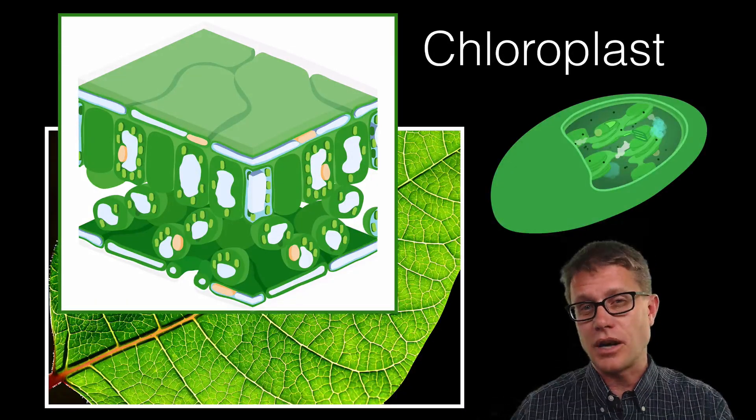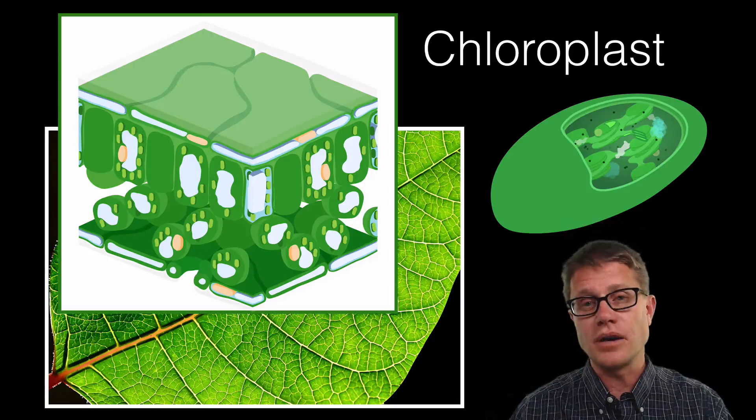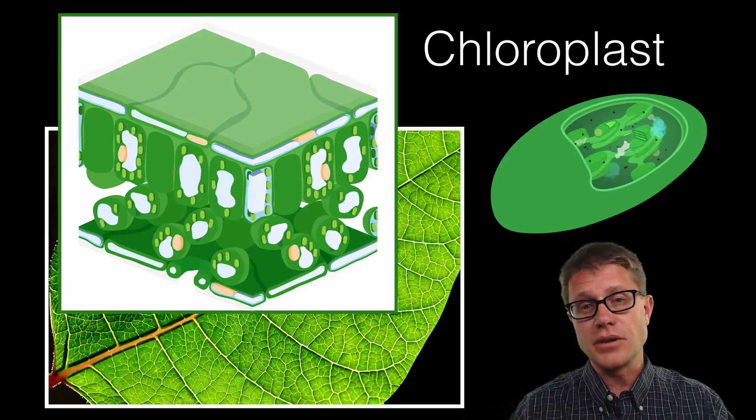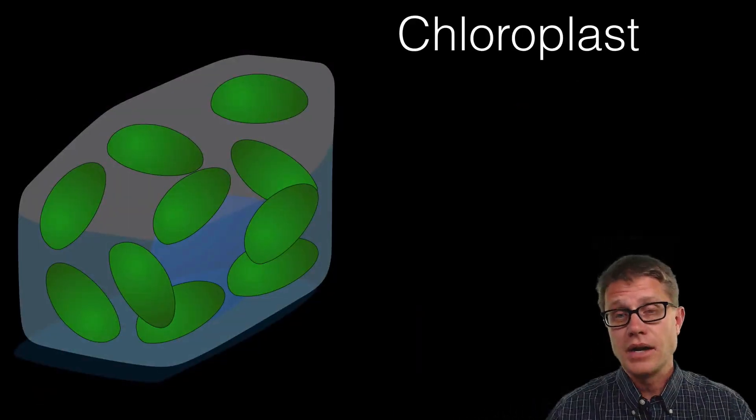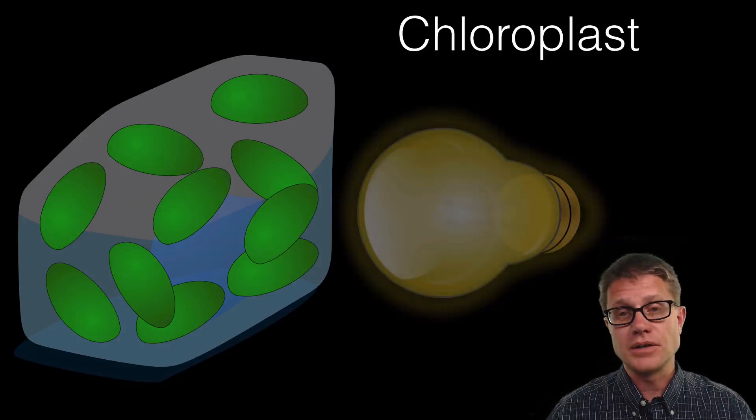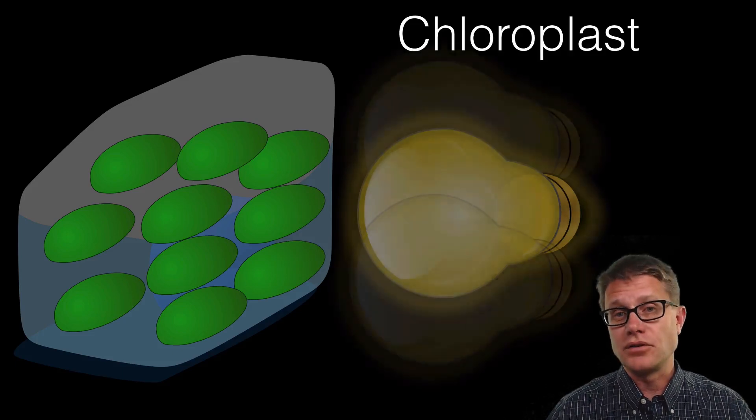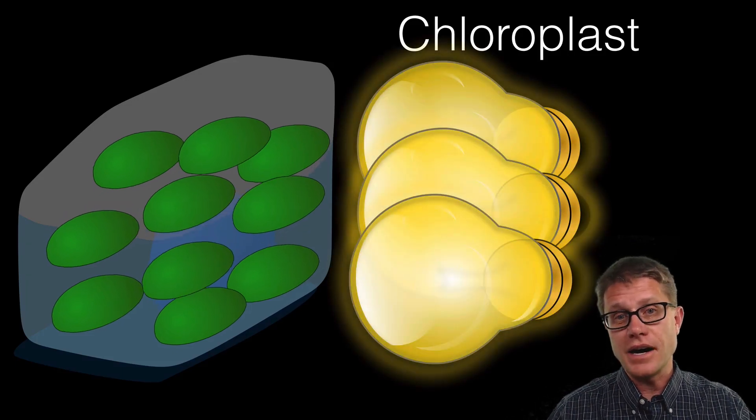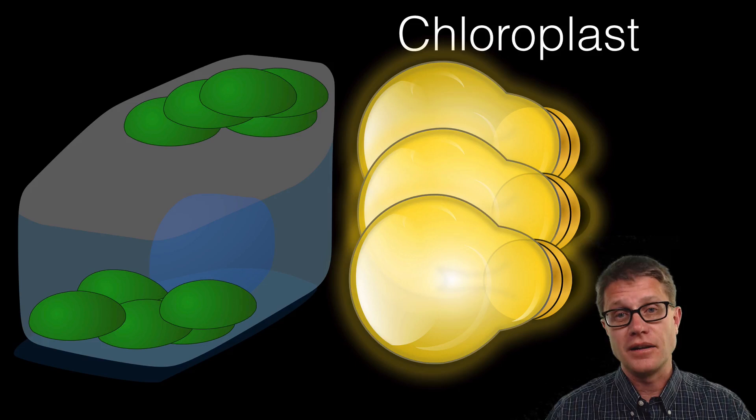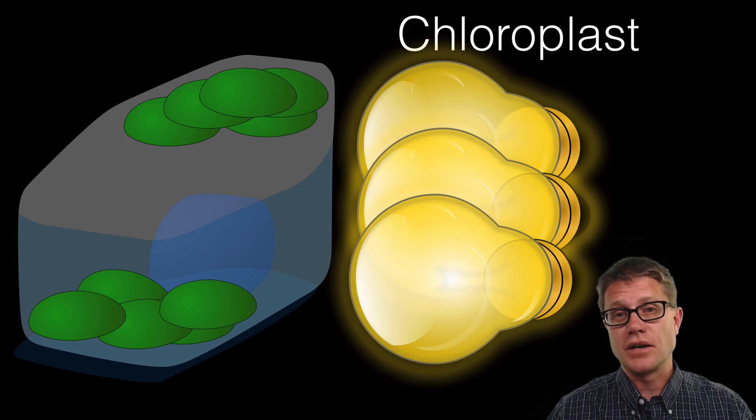They have a structure that we will talk about in just a second. But it is important to understand that they are not fixed within the cell. They can move around. And so if we apply a little bit of light to a cell, all of the chloroplast will line up so they can get the maximum amount of light. If we apply too much light to that cell they will hide on the sides of the cell. They are doing that to protect themselves from damage.